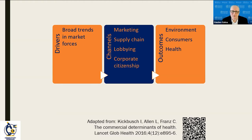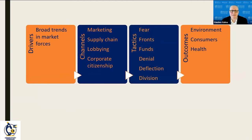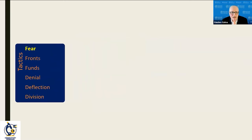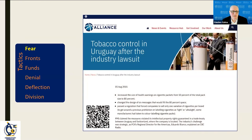The diagram describes the broad trends driving market forces, the channels companies use to exert influence and power, and the outcomes on the environment, consumers, and health. Our paper inserts a plea for a strong emphasis on the tactics used by these companies. We use the alliterative list: fear, fronts, funds, denial, deflection, and division — though we do not claim this is the full list of tactics used.